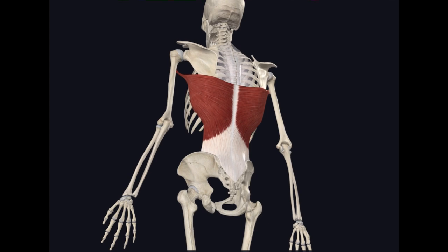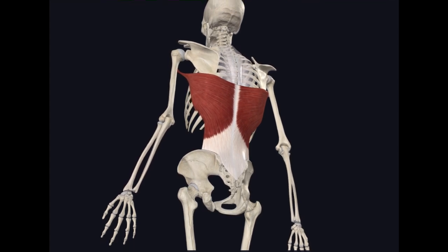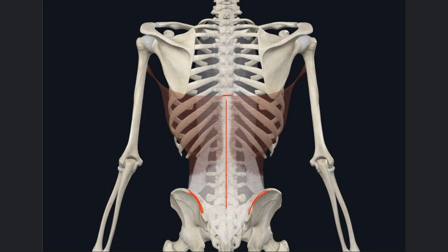The lats originate from a pretty wide span — the spinous processes of T7 all the way down to L5, partially through the thoracolumbar fascia, the iliac crest of the pelvis, and fibers originating on ribs 9 through 12. With that attachment to the ribs, the lats can act as an accessory muscle of respiration, both with deep inhalation and forced exhalation. The main idea: a wide sweeping origin across the posterior trunk and pelvis.